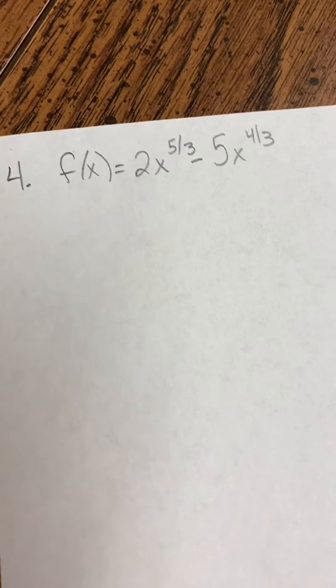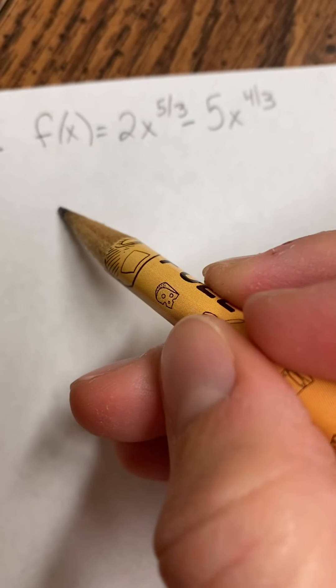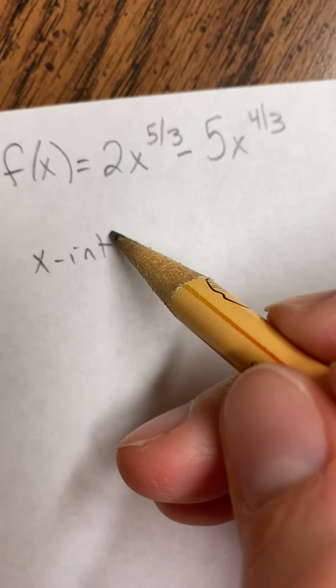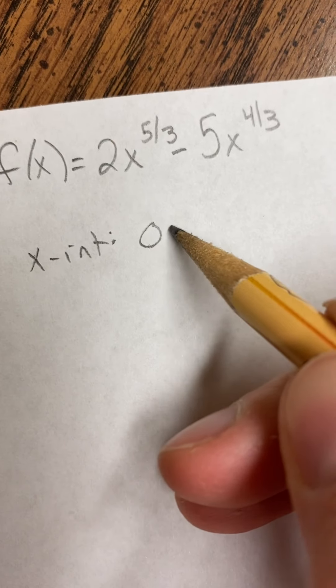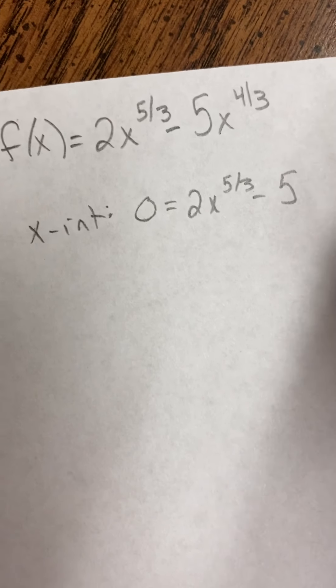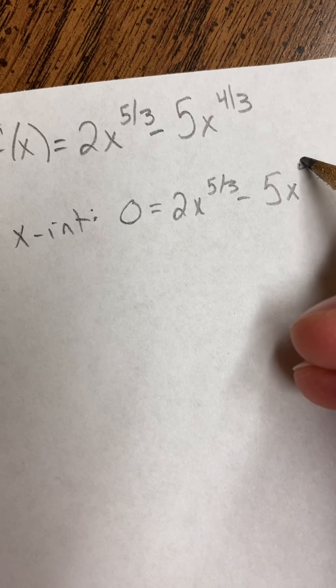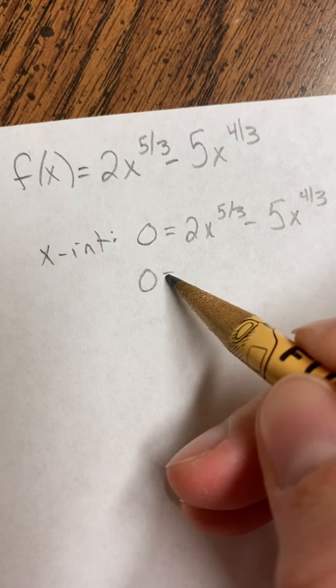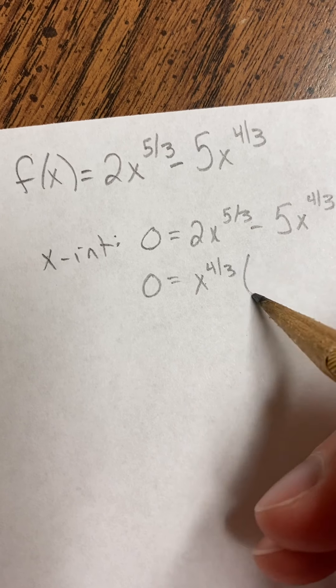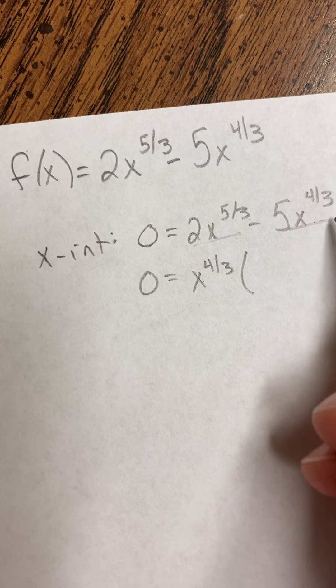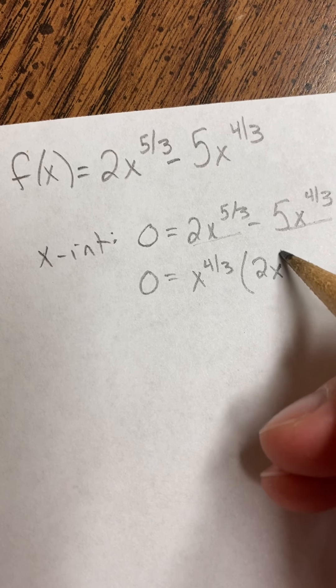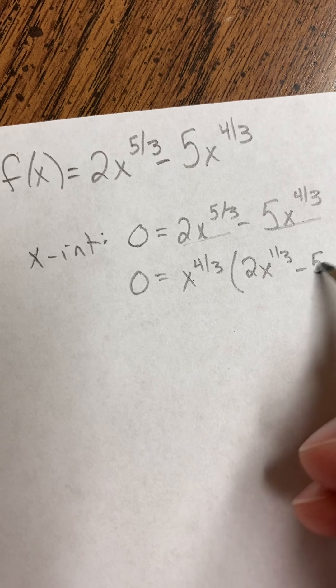So, we're going to start out by finding the pieces that we started with before. We're going to find x-intercepts. We find x-intercepts by plugging in zero for y. And now to do this, I'm going to factor out the lesser exponent, which is x to the four-thirds. So remember, that's like dividing these out, so you subtract the exponents. So that leaves us with 2x to the one-third minus 5.